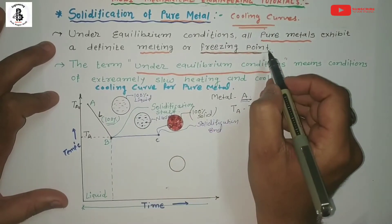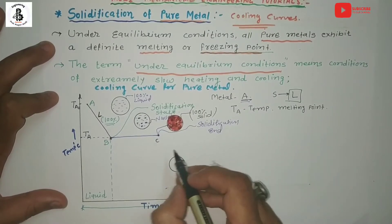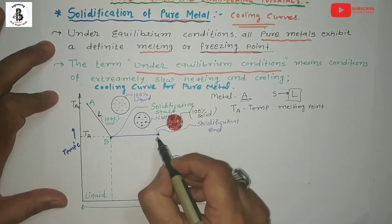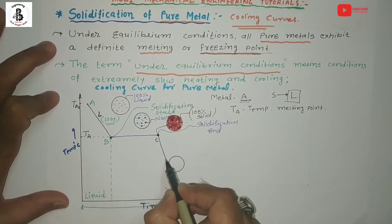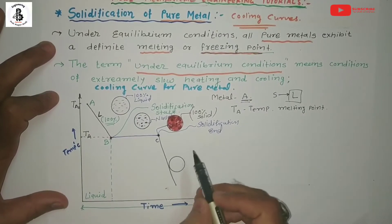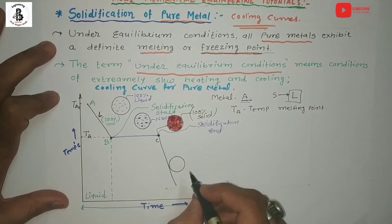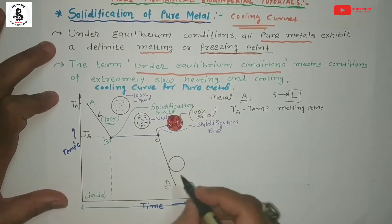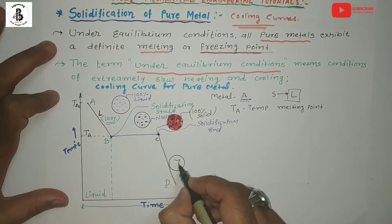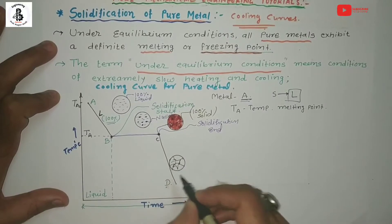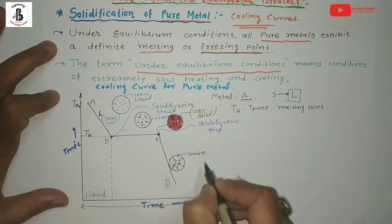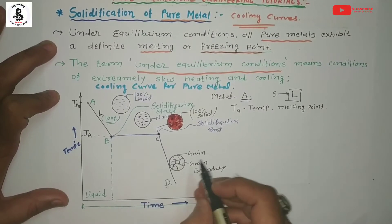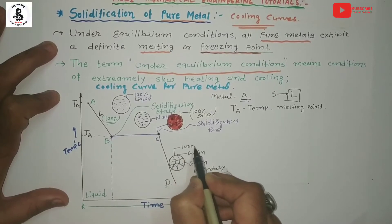After point C, the solid phase will cool down up to room temperature. The solid phase is converting into 100% solid. So in the region C to D, it will be the rearrangement of the structure of solid material A. The microstructure of C to D will show grains separated by grain boundaries. C to D is once again 100% solid material.